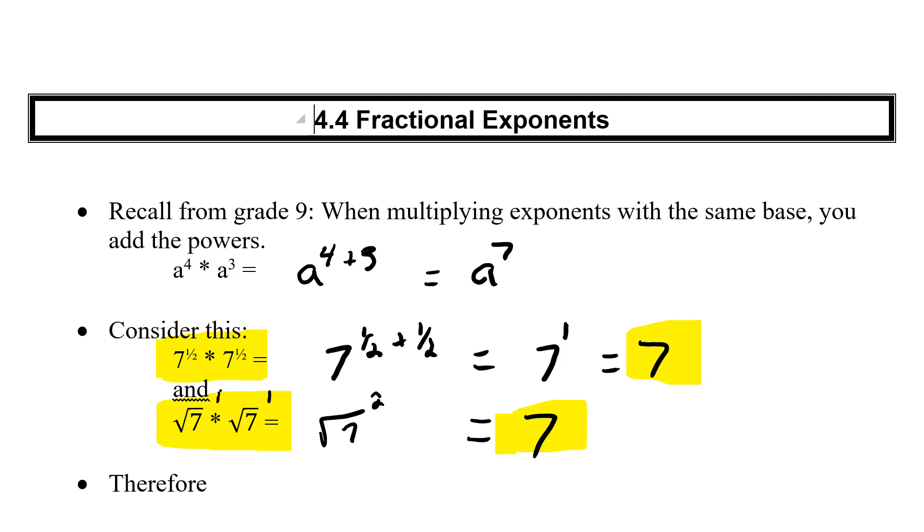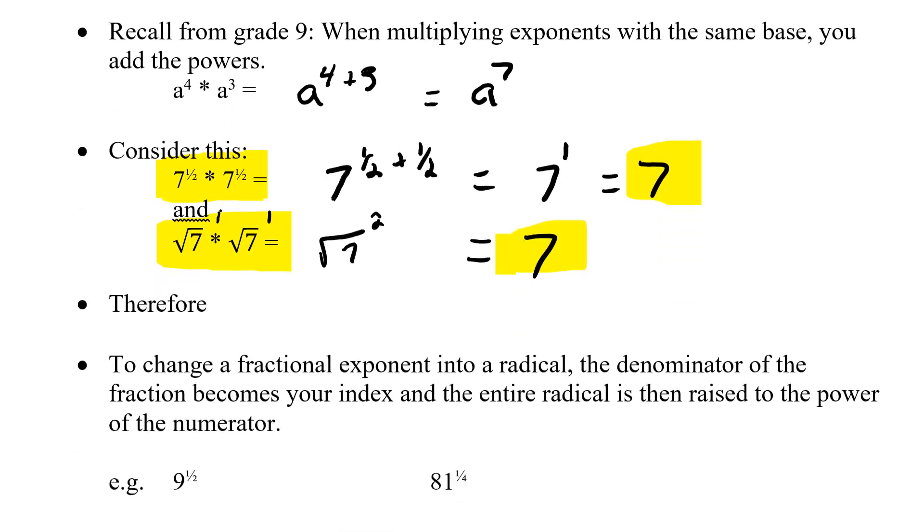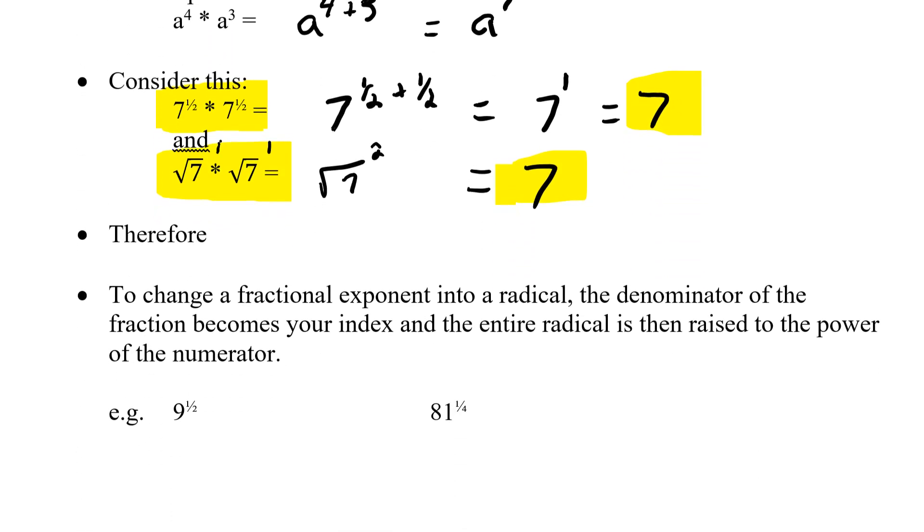So let's see how we take a fractional exponent and change it into a root. Essentially what we have is a fractional exponent to a radical. The denominator of the fraction becomes my index, and the entire radical is then raised to the power of the numerator.